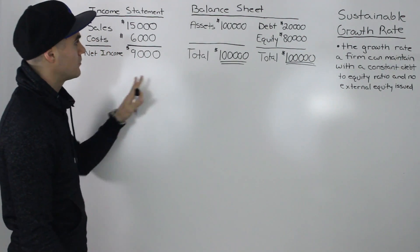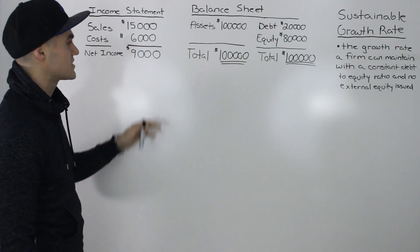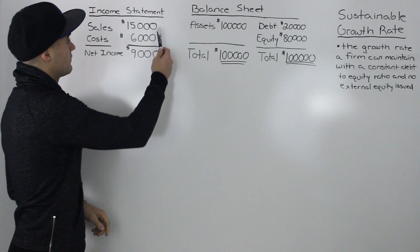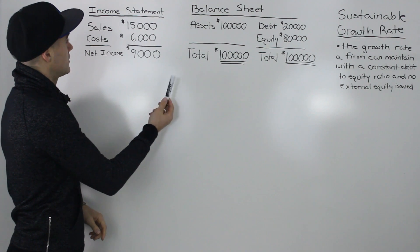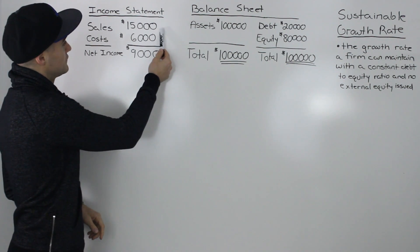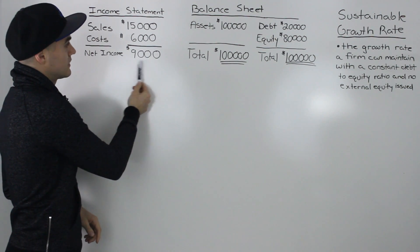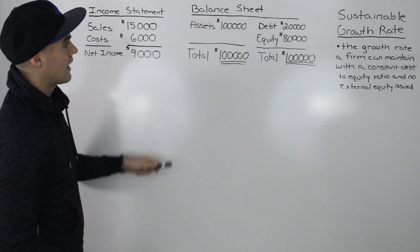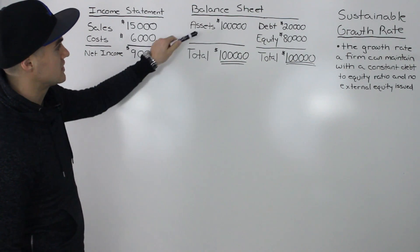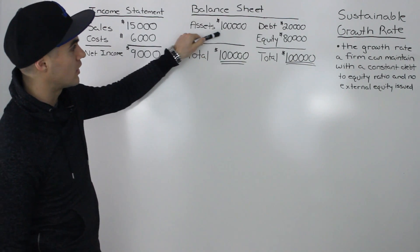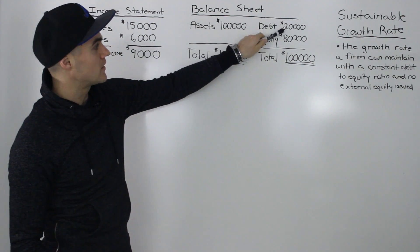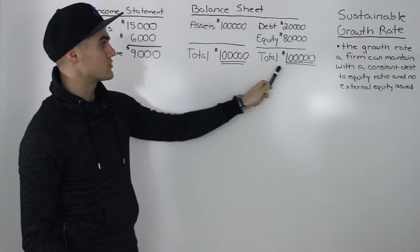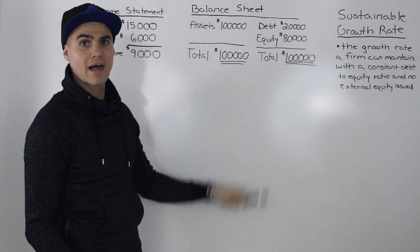So we have a company here. Here are its most recent financial statements. We have the income statement with sales of $15,000, costs of $6,000, and then net income of $9,000. And then a balance sheet: the assets total $100,000, debt is $20,000, equity is $80,000, and both sides balance.